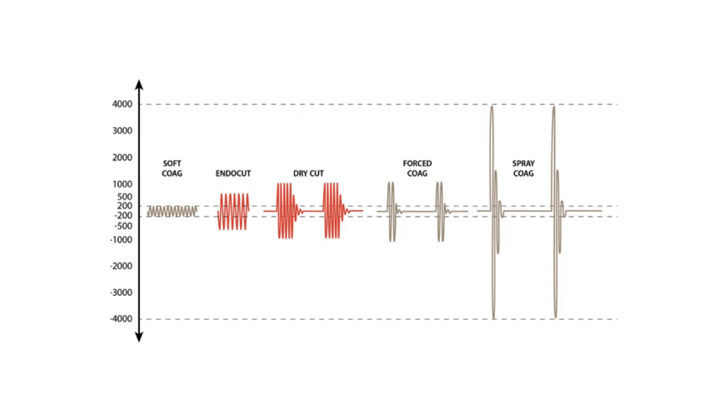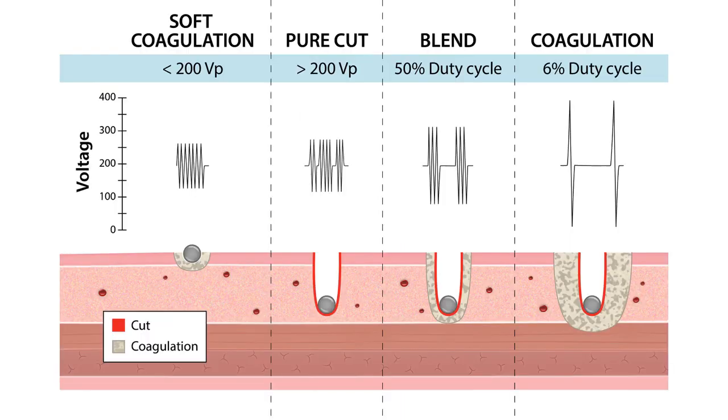Let us look at the tissue effects in relation to these voltage peaks and the waveforms. As you can see here, with soft coagulation, less than 200 volts peak, you get superficial coagulation. With pure cut, more than 200 volts peak, you get a nice clean cut.